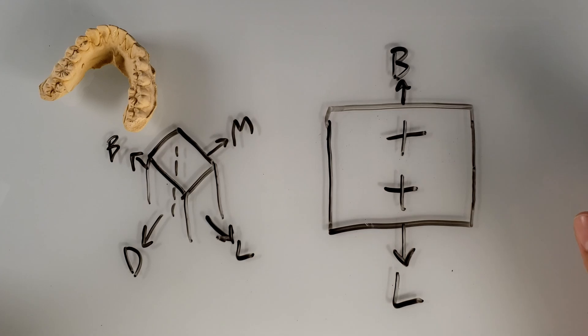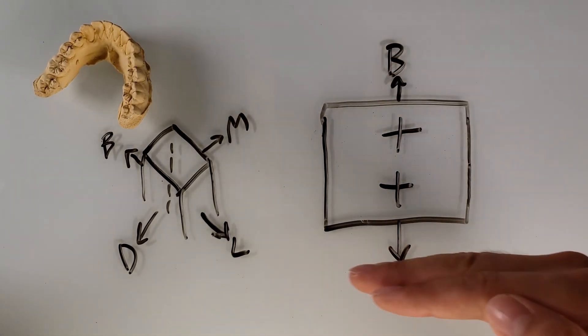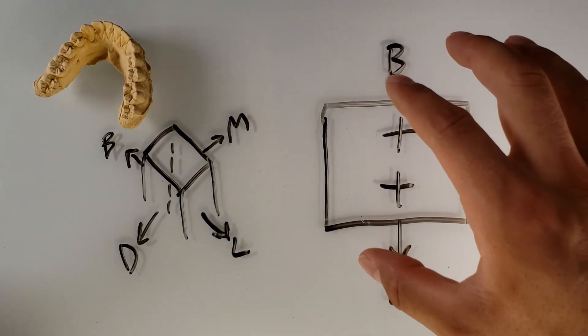Again, this whole square is the occlusal. These are the directional terms, noting that this is the buccal side, the cheek. This is the lingual side, the tongue. Each of these is a cusp, looking at it from the overhead view.